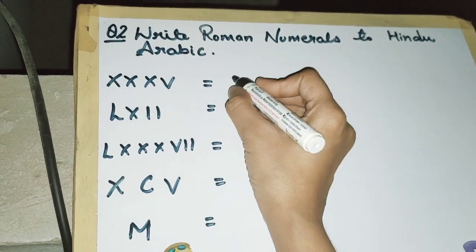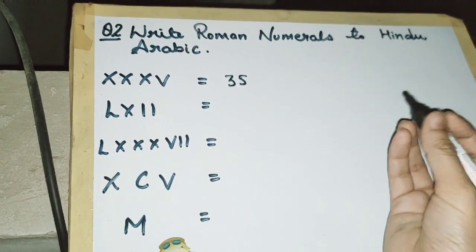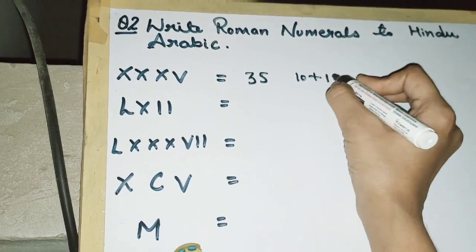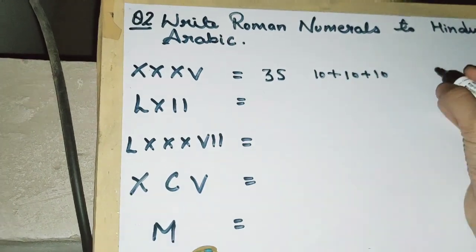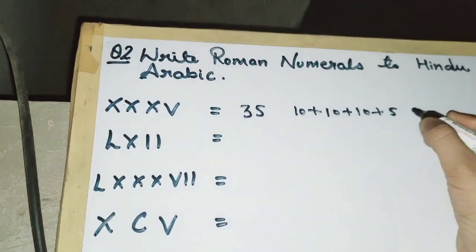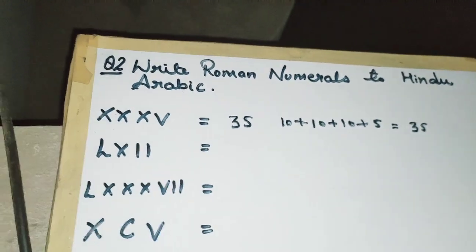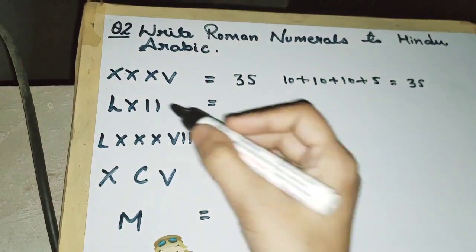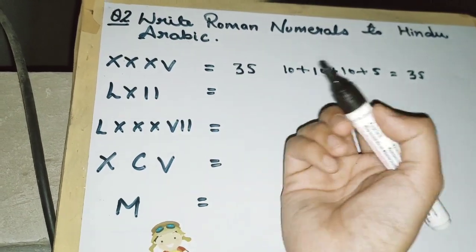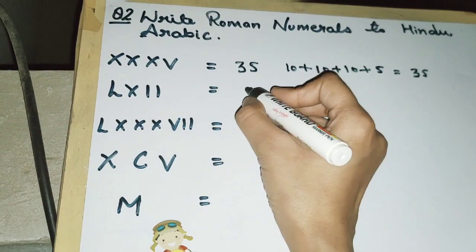equals 35. You can do it either way. Next is LXII. First, L is 50, plus X is 10, plus 1 plus 1, so this is 62. You can write the answer directly